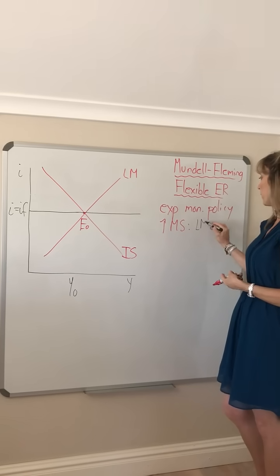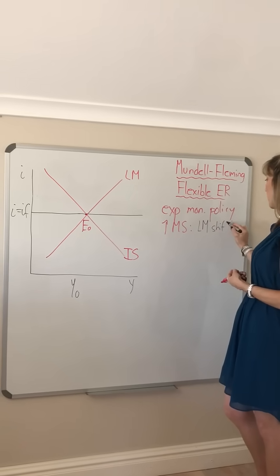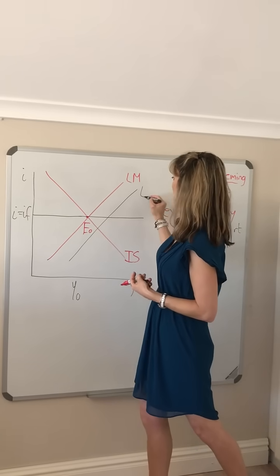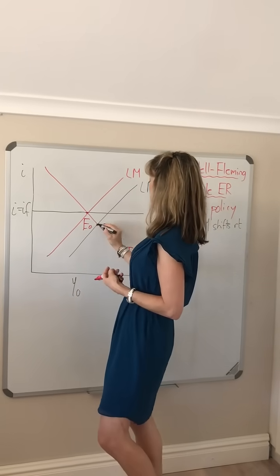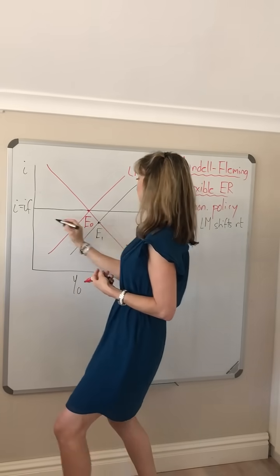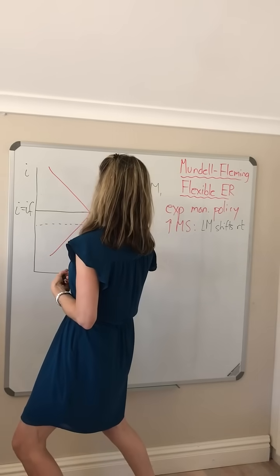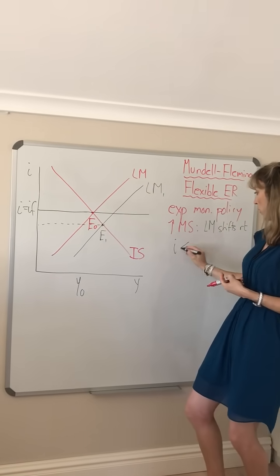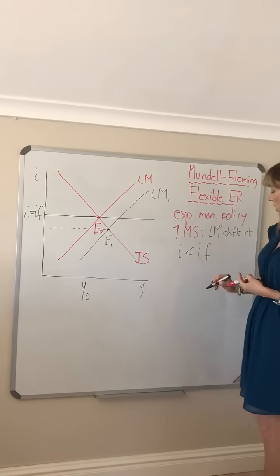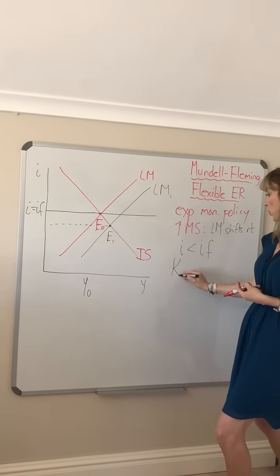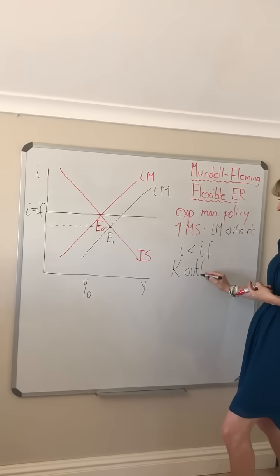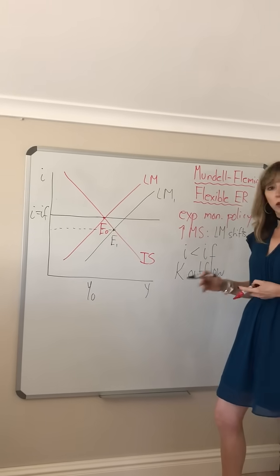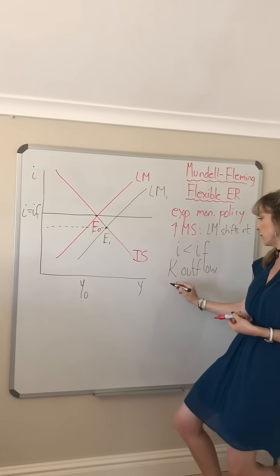LM shifts to the right because that impacts the money market first. So your LM curve is going to shift here, and that is going to cause your domestic interest rate to fall below that prevailing in world markets. That's going to cause a capital outflow, same way as we've seen before.